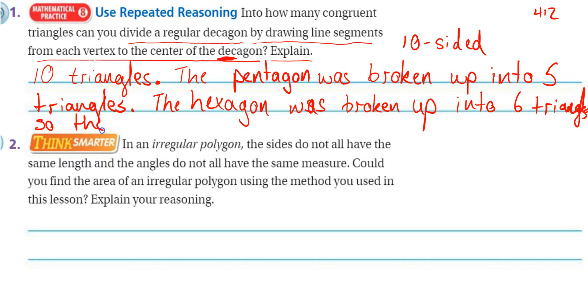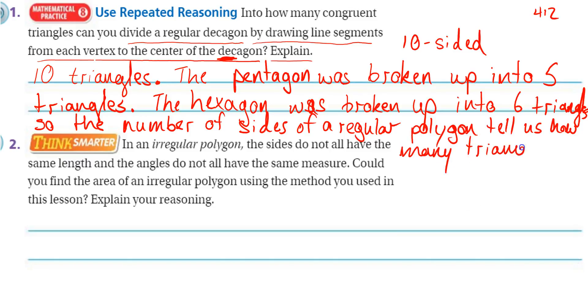So the number of sides of a regular polygon tells us how many triangles we will have.